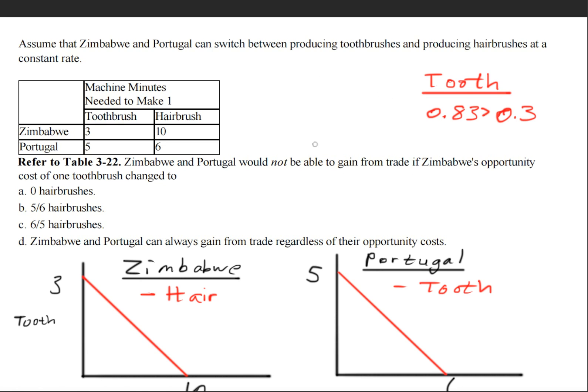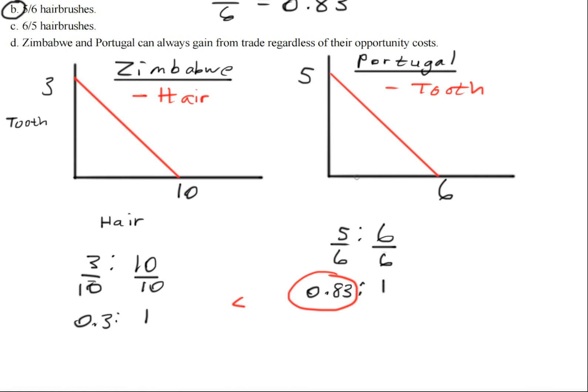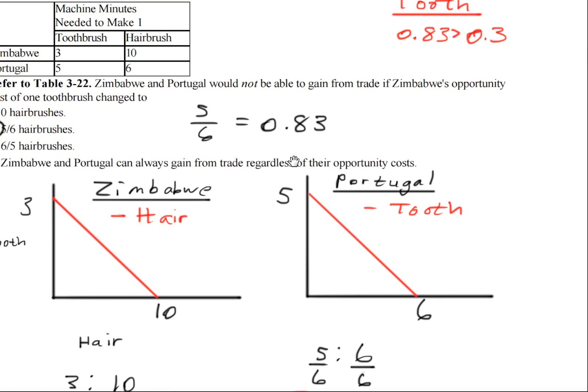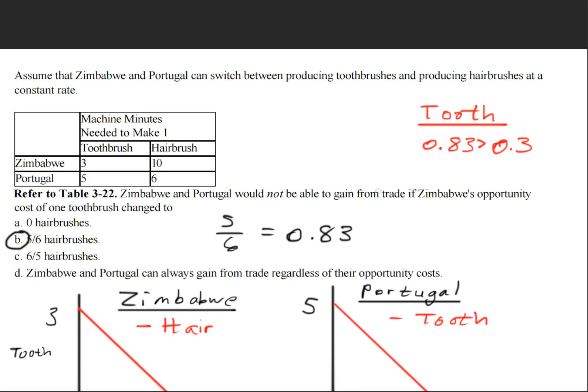So Zimbabwe cannot have answer choice B. And because five over six is equal to point eight three. And remember here that point eight three belongs to Portugal. And Portugal has the comparative advantage. What this means is, if it was five over six as the opportunity cost, this would change it from point three to point eight three. And instead of them being greater, now they're equal to each other. Well, we don't want that to happen. Otherwise, why would they trade? They would not be able to gain anything out of this. Somebody has to have a comparative advantage. Thus, answer choice B is the correct answer.